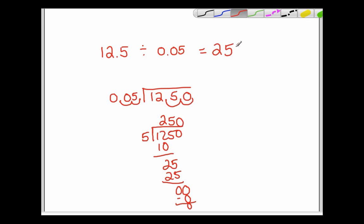There are 250 five-hundredths in 12.5. Hope you enjoyed.